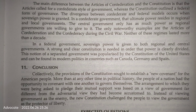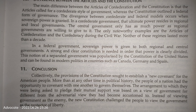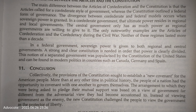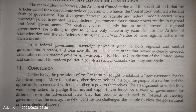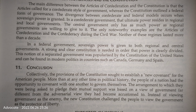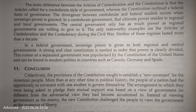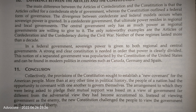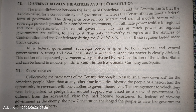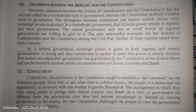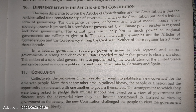In conclusion, collectively the provisions of the Constitution sought to establish a new covenant for the American people. More than at any other time in political history, the people of a nation had the opportunity to covenant with one another to govern themselves. The arrangement was based on a view of government far different from the adversarial view they had become accustomed to. Instead of viewing government as the enemy, the new Constitution challenged the people to view the government as their protector of liberty.